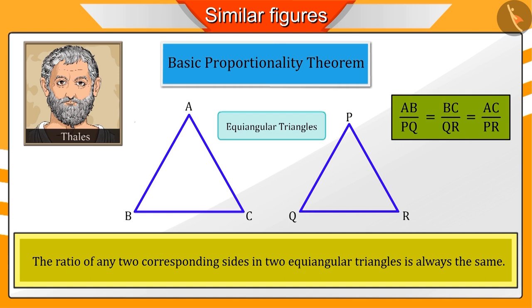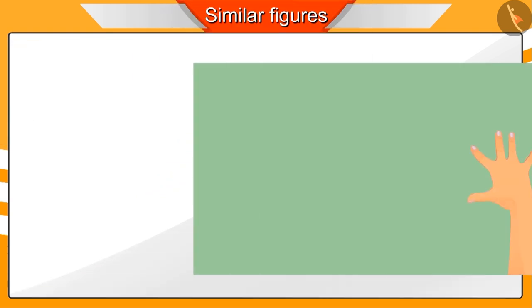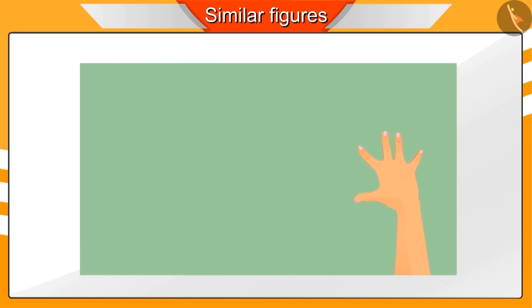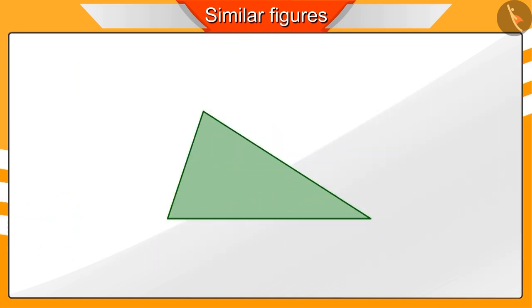Now, let's understand the basic proportionality theorem with an activity. Let's take a triangle-shaped piece of paper. Let's call it ABC.